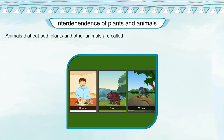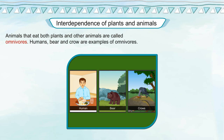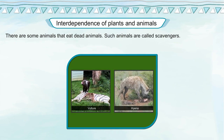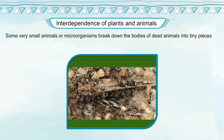Animals that eat both plants and other animals are called omnivores. Humans, bear, and crow are examples of omnivores. There are some animals that eat dead animals — such animals are called scavengers. Examples of scavengers include the vulture and hyena.